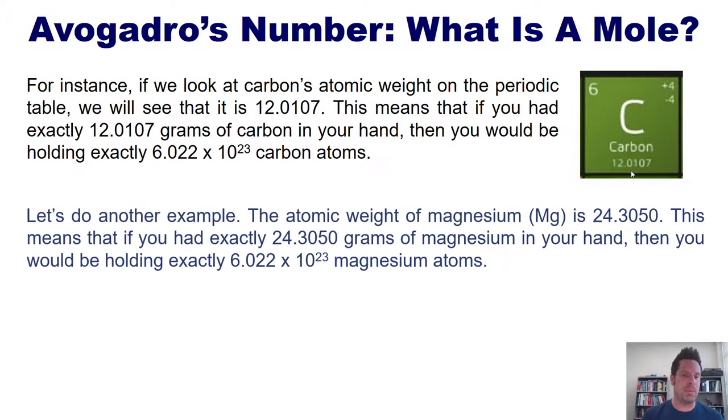Let's do another example. The atomic weight of magnesium is 24.3050. This means that if you had exactly 24.3050 grams of magnesium in your hand, you would be holding exactly 6.022 times 10 to the 23rd magnesium atoms.